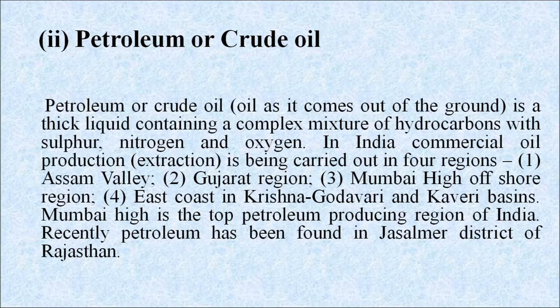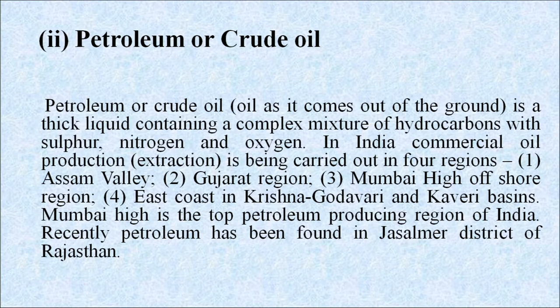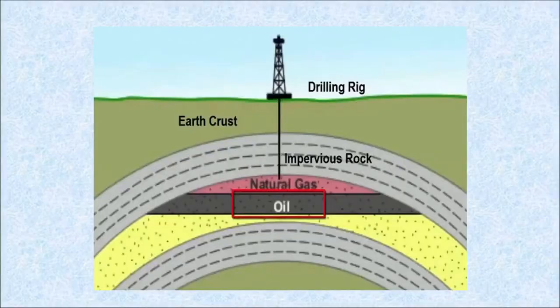Petroleum is a thick liquid containing a complex mixture of hydrocarbons with sulfur, nitrogen and oxygen. In India, commercial oil production is being carried out in four regions: first, Assam-Arakan; second, Gujarat region; third, Mumbai High offshore region; and fourth, the east coast in Krishna, Kaveri and Godavari basins. Mumbai High is the top petroleum producing region in India. Recently, petroleum has been found in Jaisalmer district of Rajasthan. Deposits of crude oil and natural gas are trapped together within the earth's crust and under the seafloor. The crude oil is dispersed in pores and cracks in underground rock formations, and is drawn out and pumped to the surface.